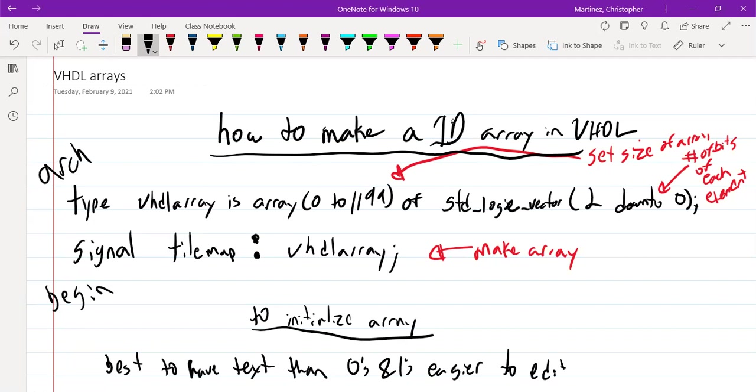The first thing we've got to do is make a new data type. Here I'm calling this data type VHDL_array. You don't have to use that name, you can use any name you want. We're going to say this is an array, and then you're going to put in the number of elements that you want. The first element would be zero index, one, two. And in this case, we're going up to 1199, which will give us 1200 elements.